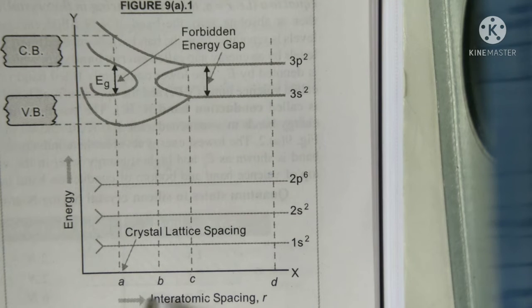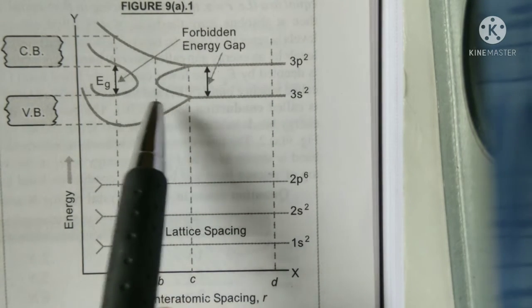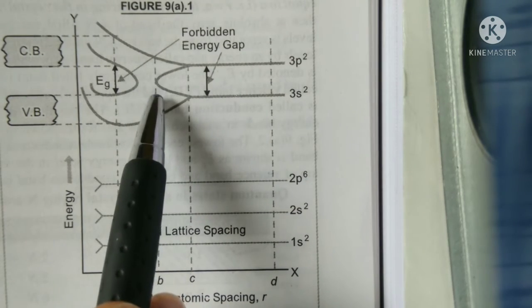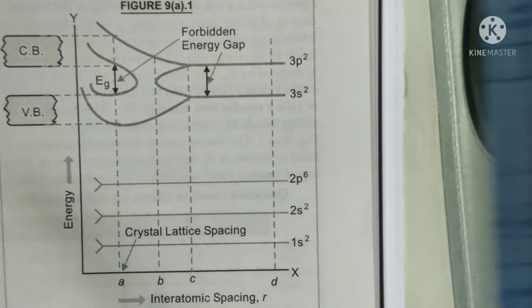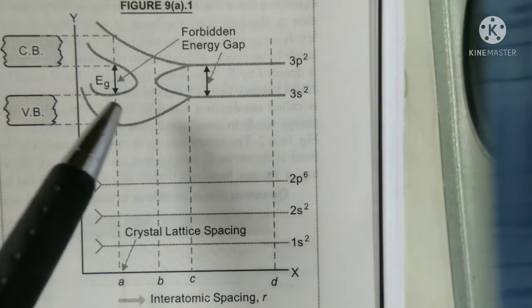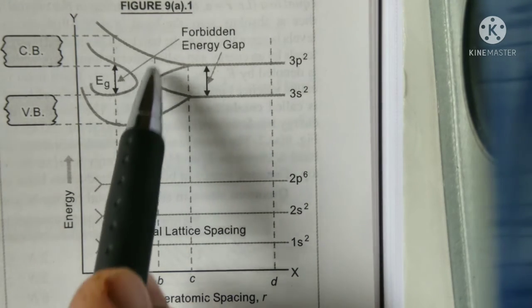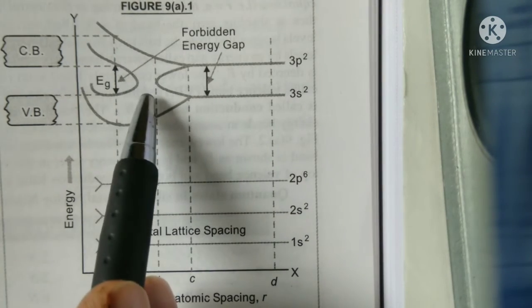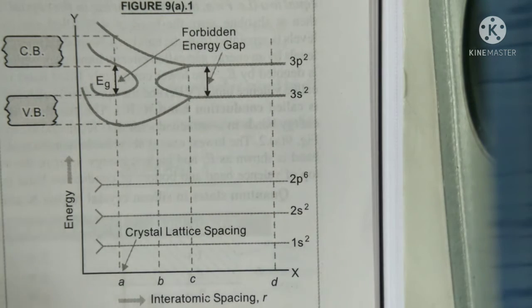When the interatomic spacing R equal to B, then we can say that 8N possible states are continuously distributed without any gap between 3s and 3p levels. At this stage the gap between 3s and 3p levels will completely disappear. The 8N possible states are continuously distributed. At this space we can only say that out of 8N, 4N are filled and 4N are unfilled.